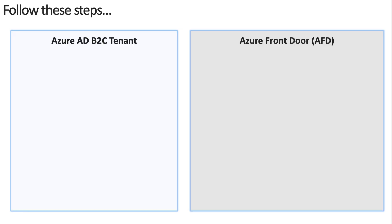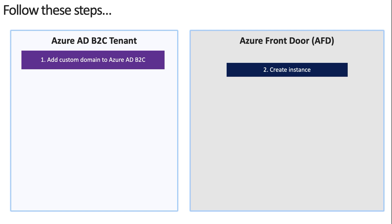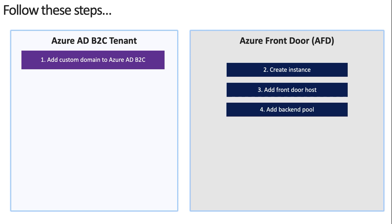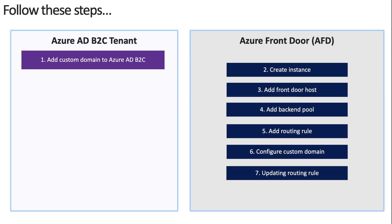Let's take a look at the sequence of steps needed to configure a custom domain. You start by adding and verifying the custom domain on the Azure AD B2C tenant. Next, you create an Azure Front Door instance — a new instance is recommended, but you can repurpose an existing one. Then you add a Front Door host, add a backend pool pointing to Azure AD B2C, and add a routing rule to forward requests from the front-end host to the backend. You then configure the actual custom domain including domain verification and TLS/certificate deployment. Finally, you update the routing rule so the newly added custom domain can receive traffic.